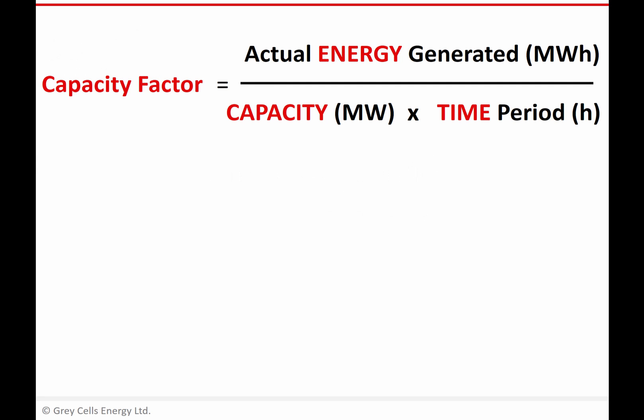So we saw that this was our basic calculation for capacity factor. We were dividing the actual energy generated by a power plant by the maximum theoretical energy output of that power plant, which is the maximum power output, its capacity multiplied by the time period over which you're operating. So it was megawatt hours divided by megawatt hours, capacity factor being a percentage. And we also made the point that typically capacity factor is not calculated over shorter periods like a day, it's typically calculated over the course of a year, a year being 8,760 hours, which is quite a useful number to remember. It'll crop up time and again in energy power type calculations.